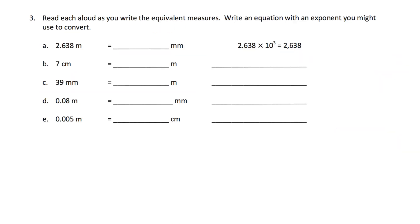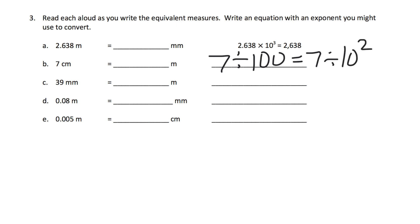Here it's just more of the same practice. Let's take a look at question B. Question B says you've got 7 centimeters, and we're going to turn it into meters. Since meters are big, we're going to have a smaller number of them to equal 7 centimeters. Since there are 100 centimeters in a meter, we take that 7 and divide by 100 — which is to say 7 divided by 10 to the second power — and that means our answer is 0.07, because that decimal moves two places to the left.